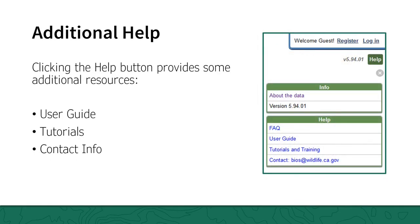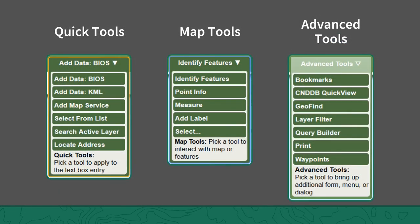If you need additional assistance while working in BIOS, press the green help button in the upper right corner. This will open a panel with several helpful links, including our user guide, the tutorial and training page, and an option to email us with your questions. The tools in BIOS are organized into three menus: the Quick Tools menu, which always works with the search box adjacent to it; the Map Tools menu, which offers tools that work within the map itself; and the Advanced Tools menu, which requires additional user input. We will cover most of the remaining tools in the next two training videos.